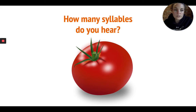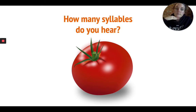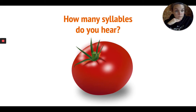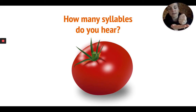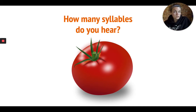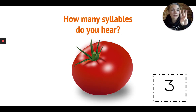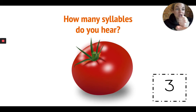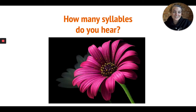What do you see now? It's a tomato. Let's use our syllable counter to say the word tomato. How many syllables did you hear? Let's try pounding it this time. Tomato. What did you hear? Three. Three syllables in tomato.